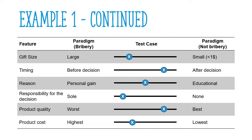Now that we have constructed our table properly, we analyze how the line forms. The center line of the points is closer to the gift paradigm than the bribe paradigm, and therefore it is safe to assume that it is not a bribe.